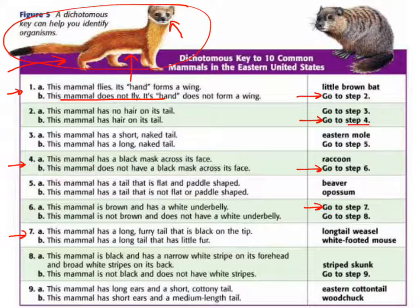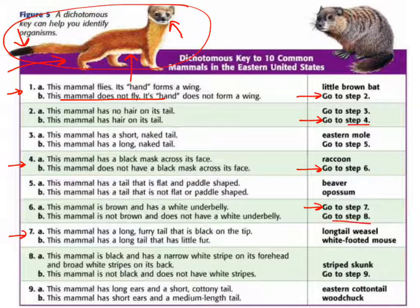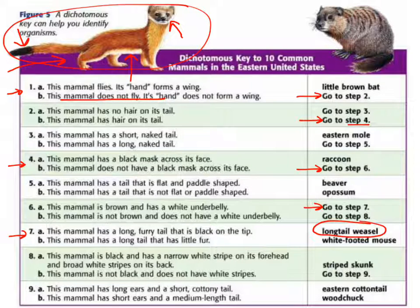Step 7A says: 'This mammal has a long furry tail that is black on the tip.' Step 7B says: 'This mammal has a long tail that has little fur.' Looking at our animal, it has a long furry tail with a black tip, so 7A is the better choice. We don't have to go any further — we have identified our organism as a long-tailed weasel. That's basically how a dichotomous key works. It's a very useful and easy-to-learn tool for identifying organisms.